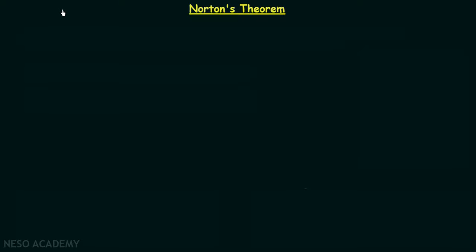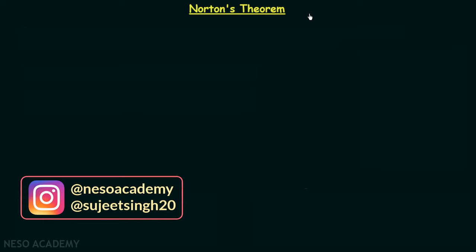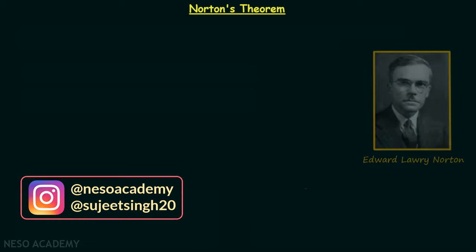Till now we have completed two theorems in this chapter. The first one was the superposition theorem and the second one was Thevenin's theorem. Now we are going to have a discussion on our third theorem, which is Norton's theorem. This theorem came after Thevenin's theorem — to be precise, 43 years later, in 1946 — and was given by an American engineer at Bell Labs known as Edward Laurie Norton.